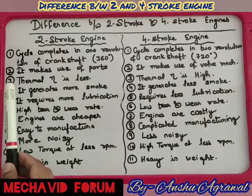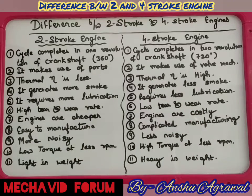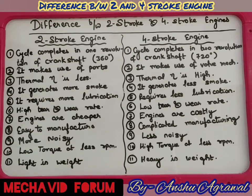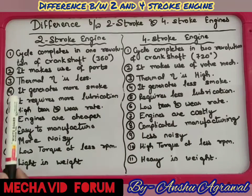Third, thermal efficiency is less in a two-stroke engine and higher in a four-stroke engine. Thermal efficiency is the ratio of work done to the heat supplied — meaning how much fuel we are giving. With the same quantity of fuel, a two-stroke engine gives less work output, whereas a four-stroke engine gives more work done. So thermal efficiency is less for a two-stroke engine and more for a four-stroke engine.